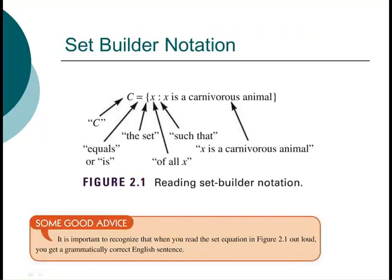Okay, so set builder notation. This is how we list sets. We've got the set C, and what we have is we call this our variable. This is saying X. We're saying all right, we've got this set and we're talking about X is, or to define X. And then this colon here means such that, and that's naming what X is.